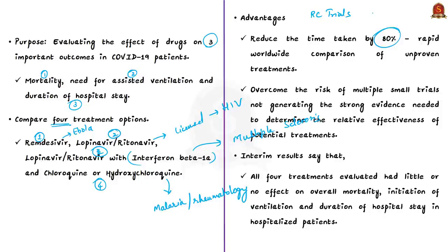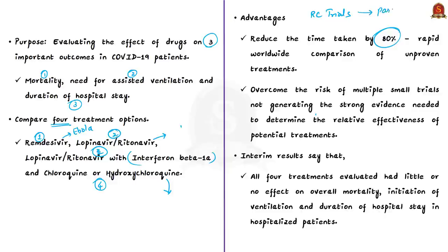This will help facilitate rapid worldwide comparison of unproven treatments and overcome the risk of multiple small trials not generating strong evidence needed to determine the relative effectiveness of potential treatments. A randomized clinical trial is a study in which participants are divided by chance into separate groups that compare different treatments. However, as the news says, the interim results of the Solidarity Trial are not positive — all four treatments evaluated had little or no effect on overall mortality, initiation of ventilation, and duration of hospital stay.